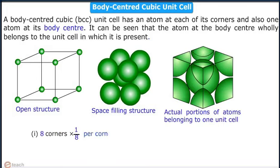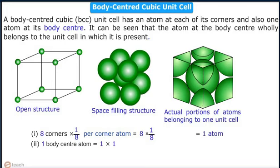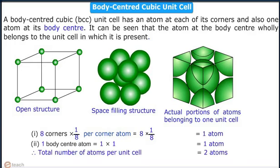The effective number of corner atoms is equal to 1 effective atom. The effective number of body center atoms is equal to 1. Therefore, the total number of atoms per unit cell is equal to 2 atoms.